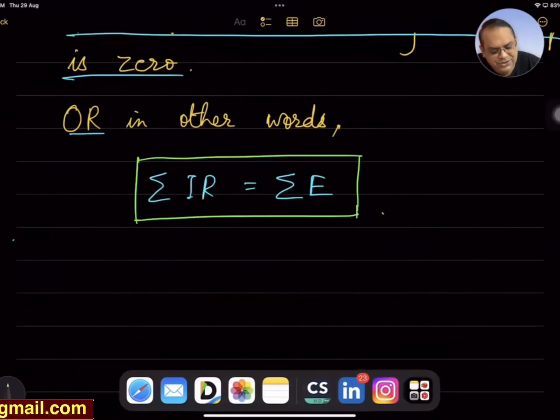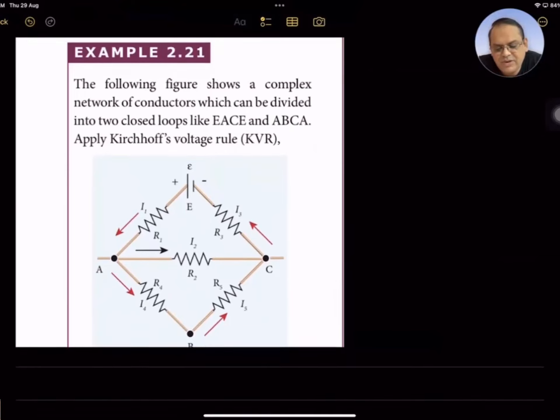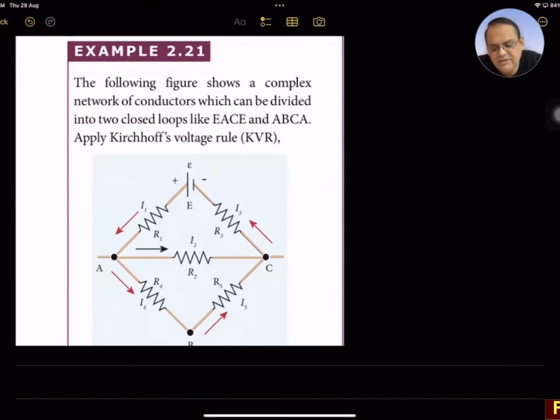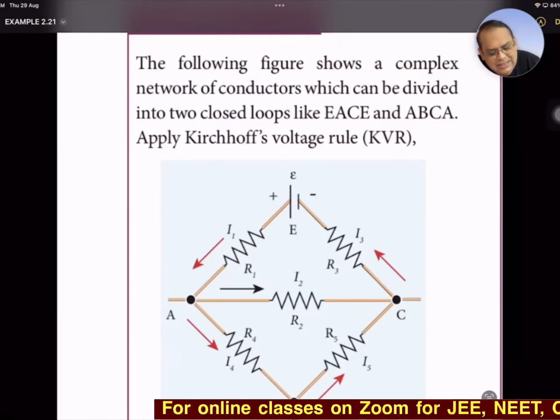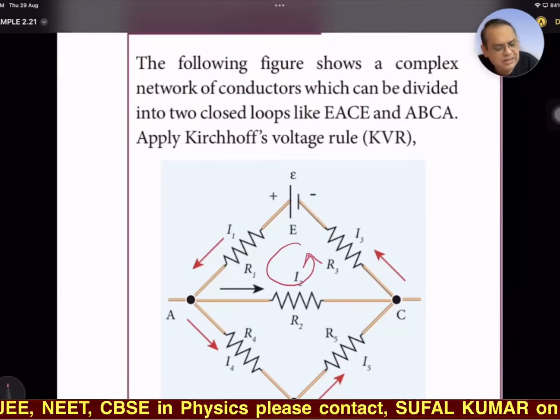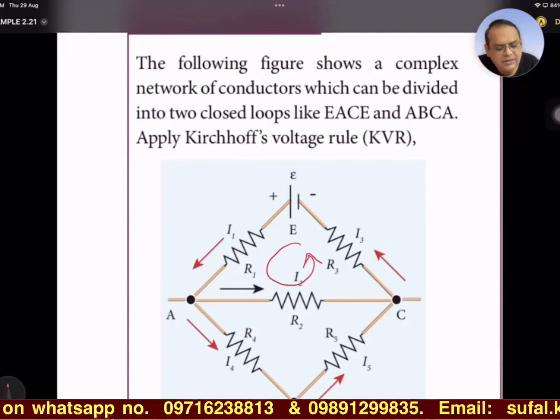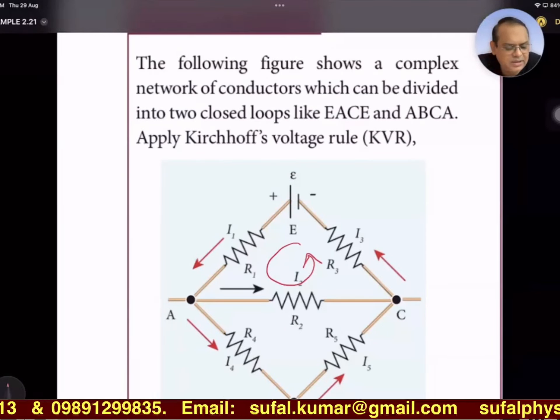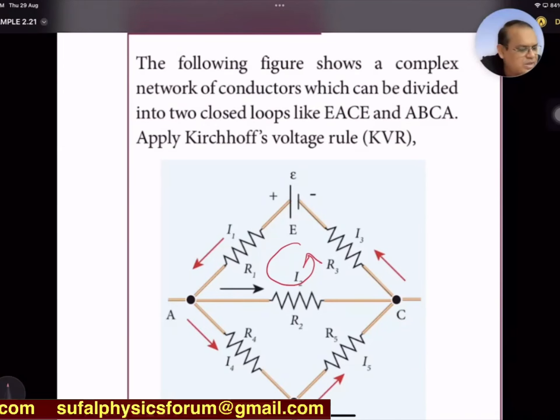Let's see an illustration. The following figure shows a complex network of conductors which can be divided into two closed loops like EACE. We are to traverse this circuit. In this particular circuit, one more clarification: we are to traverse the circuit, so our direction is also there, along the direction of current or opposite to the direction of current.